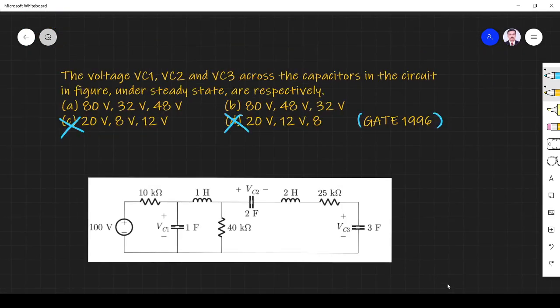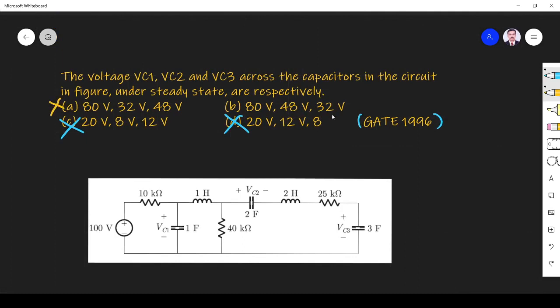Which option is matching that 48, 32? This is wrong, this is 48, 32, so option B is the right answer. Thank you.